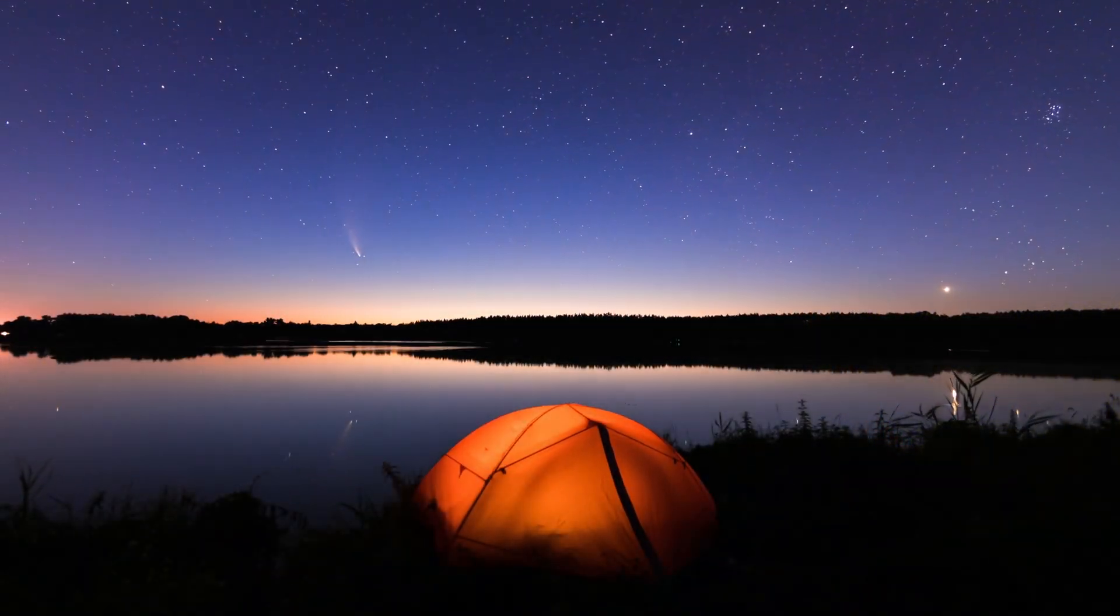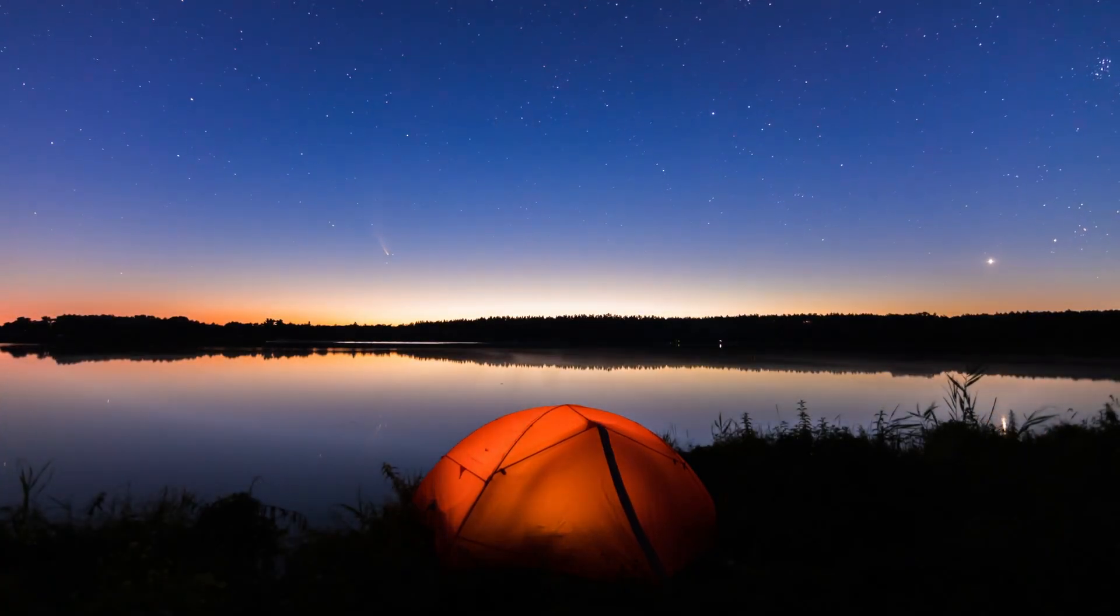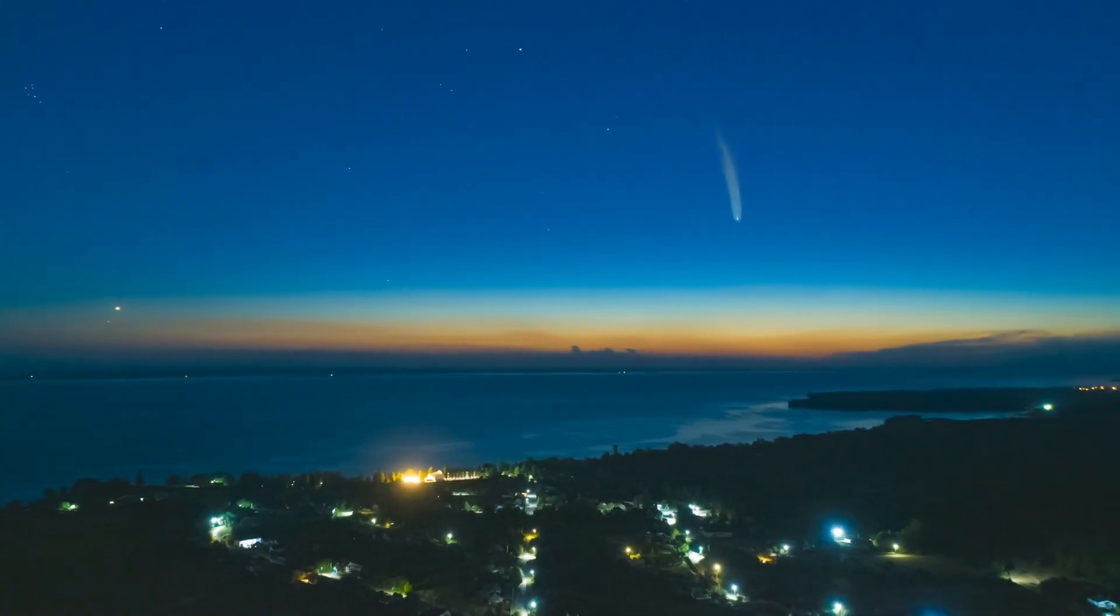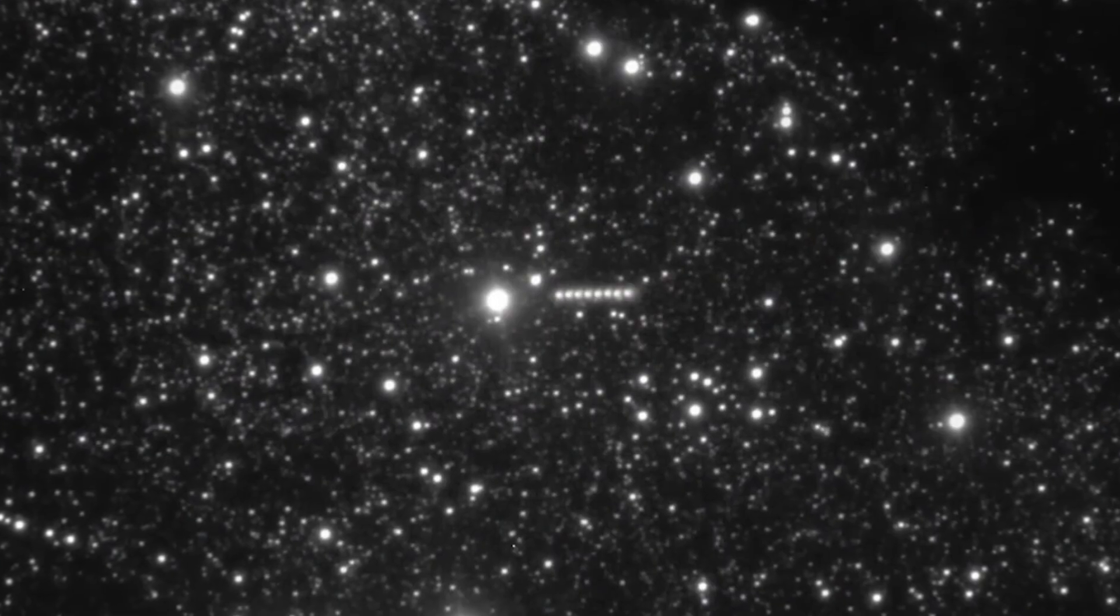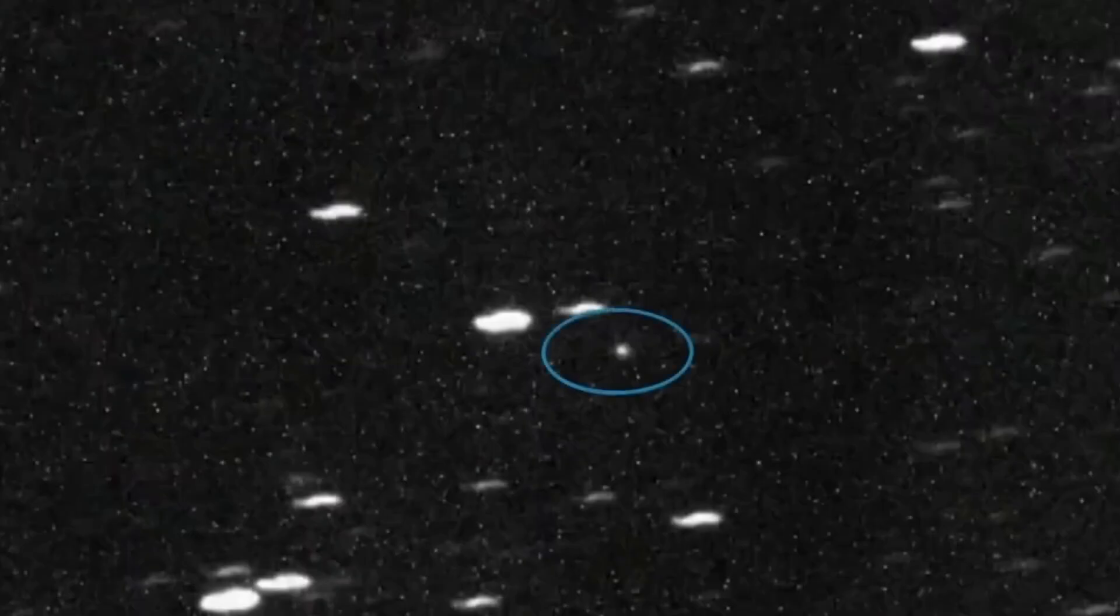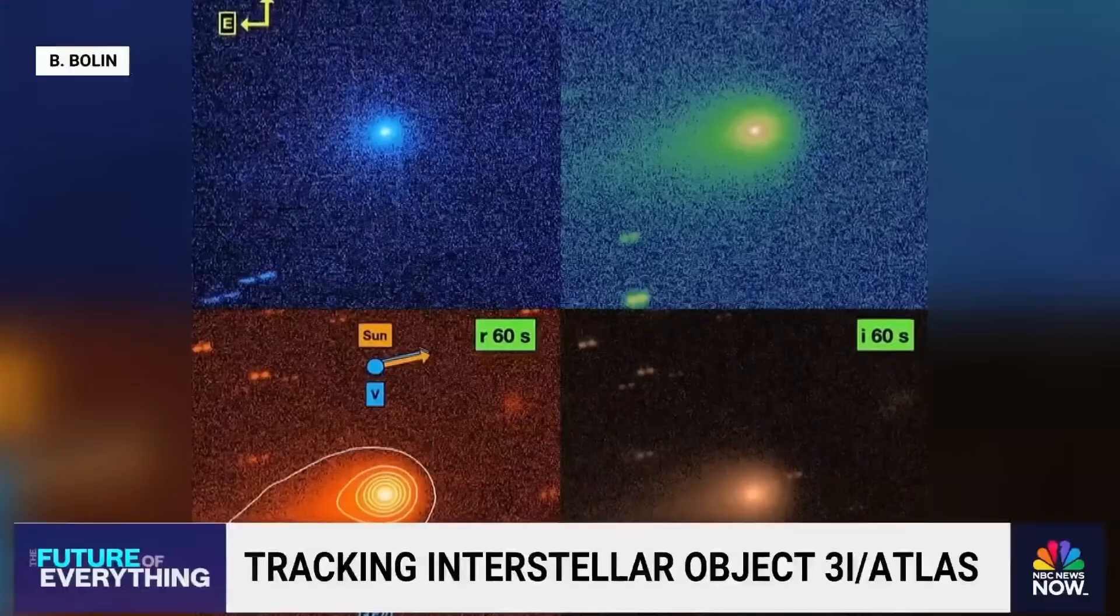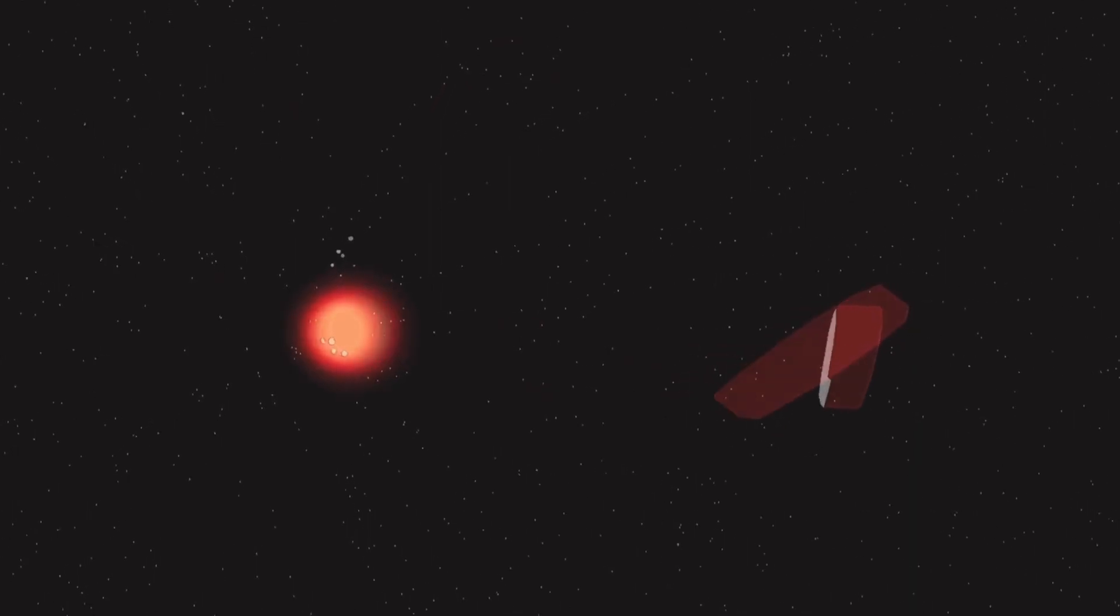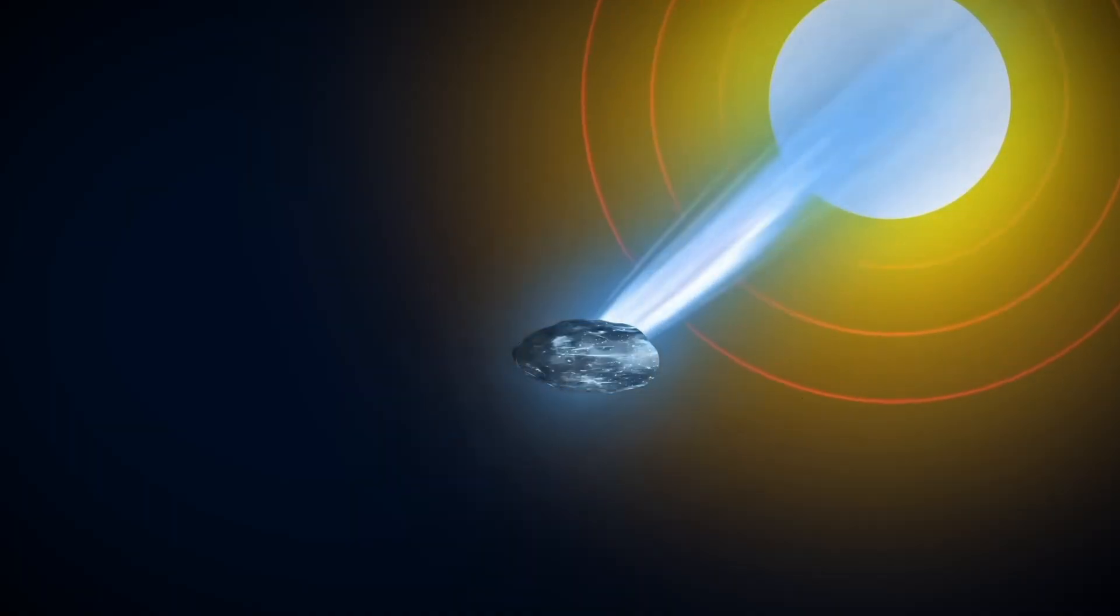But here's what makes that moment so fascinating. When an object is at perihelion, deep in a gravity well and moving at maximum velocity, even the smallest force—a venting jet, a rotational burst, a sudden fragmentation—can alter its entire trajectory. If anything unusual happened during that window, we wouldn't have seen it.